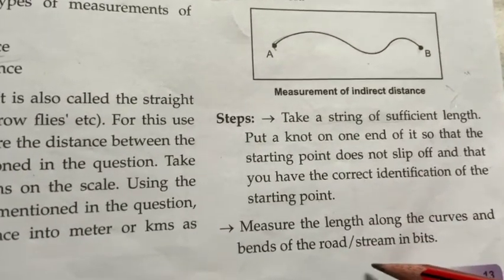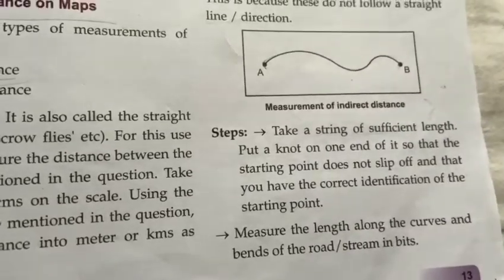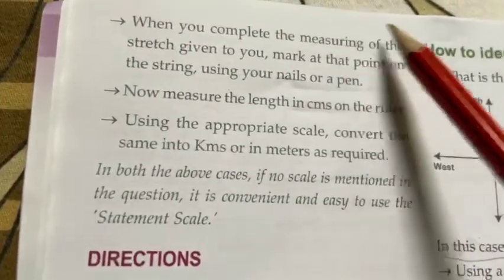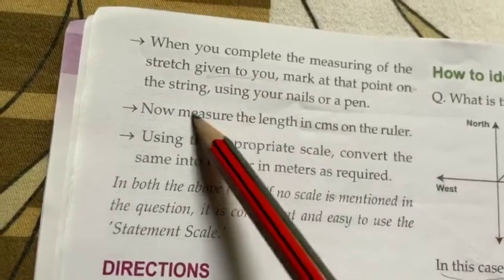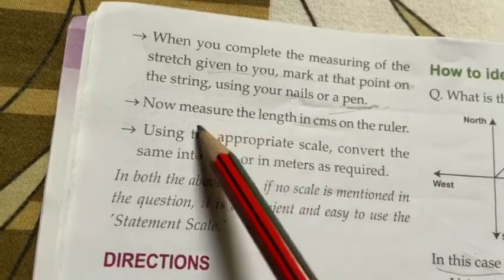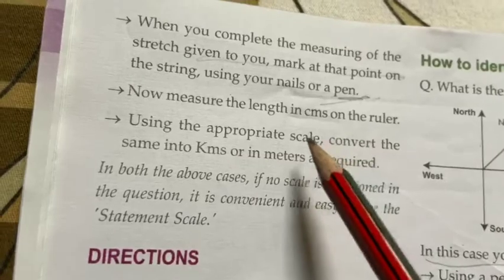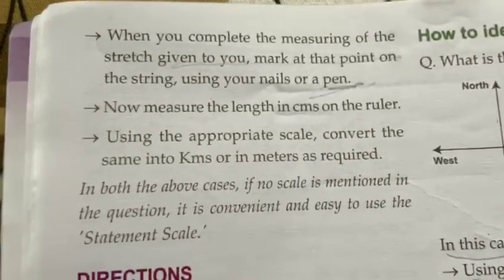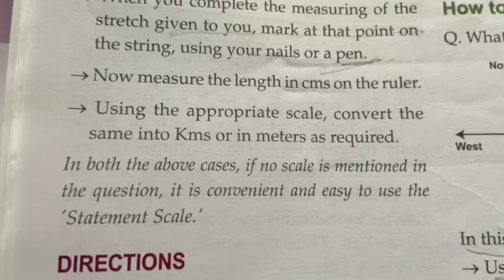Place the thread along the curves and bends of the road, measuring the full length. When you complete measuring, mark the point on the string using nails or a pen. Now measure the length in centimeters on the ruler — keep the string straight against the ruler and measure the distance.